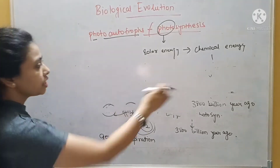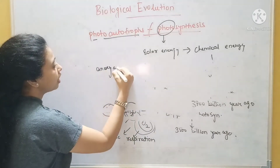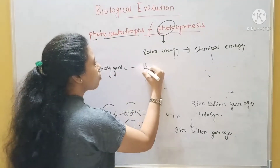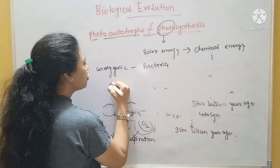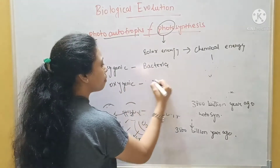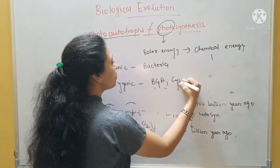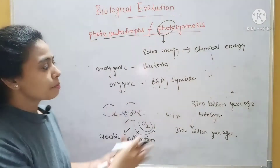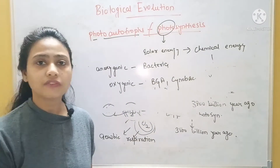One more thing: anoxygenic photosynthesis was performed by bacteria, while oxygenic photosynthesis was performed by blue-green algae and cyanobacteria. These are all bacterial categories — prokaryotes. These developed and the environment became oxygen-rich.